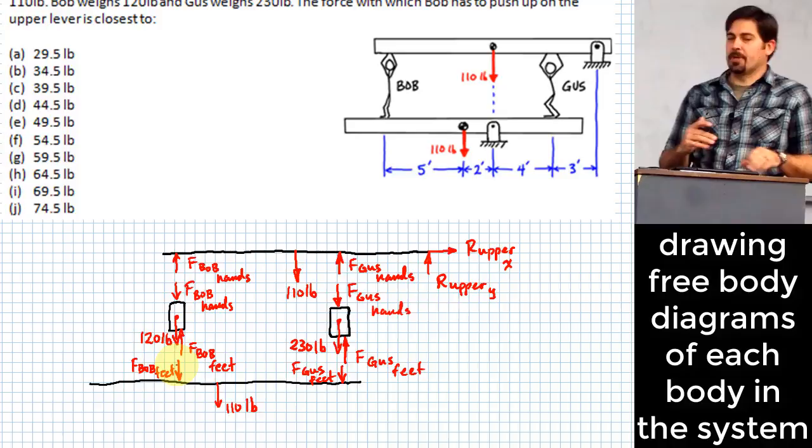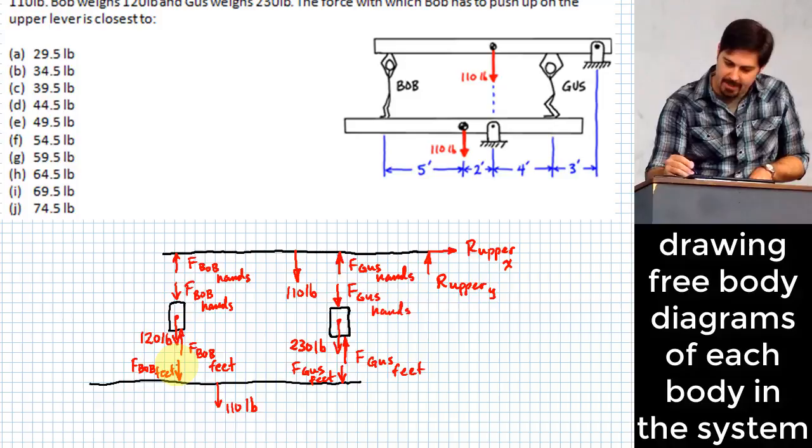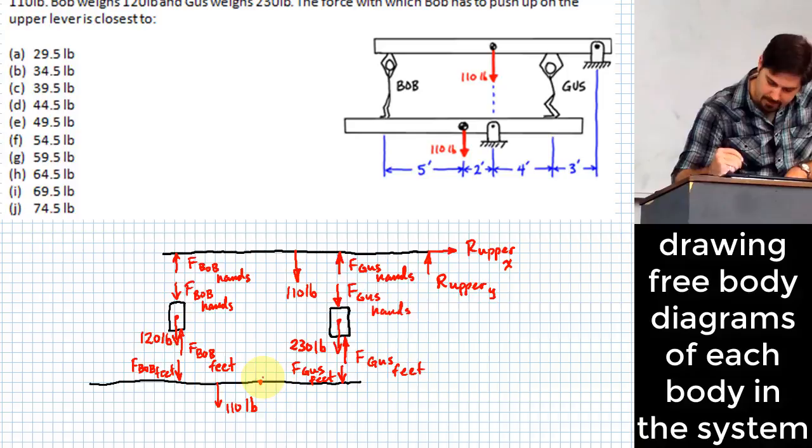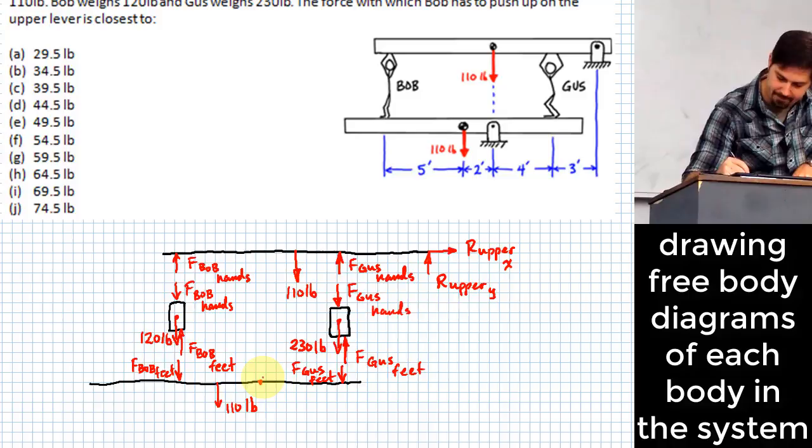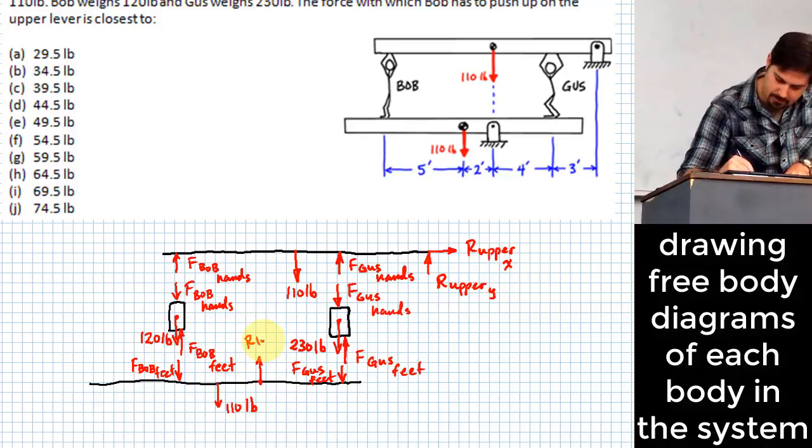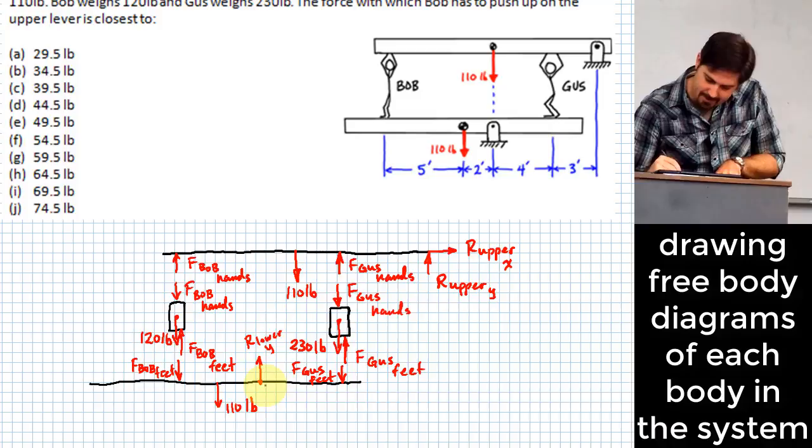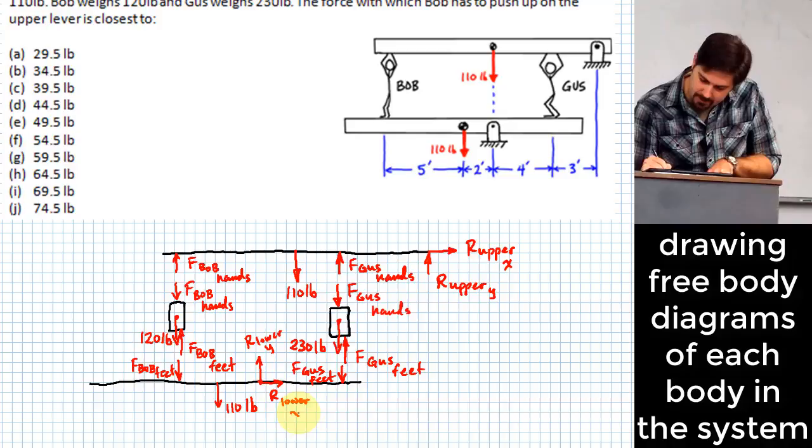It's a lot going on, isn't it? It's a lot of arrows. Are we missing anything? Yeah, there's another pin here where we have the lower beam connected to this pin. So what do I have there? R_lower y and then I'll have another one here, R_lower x.